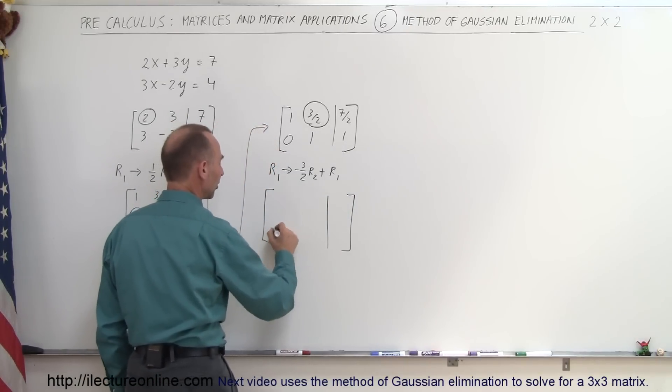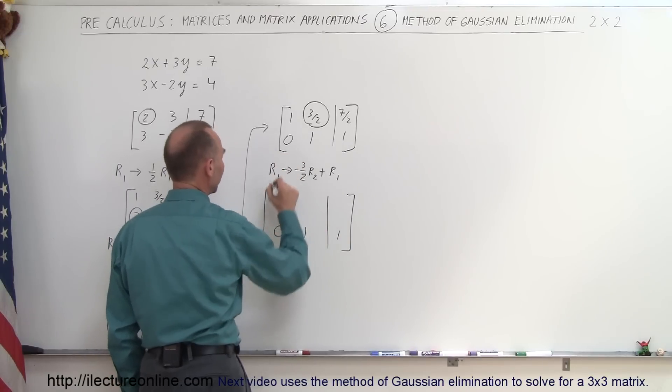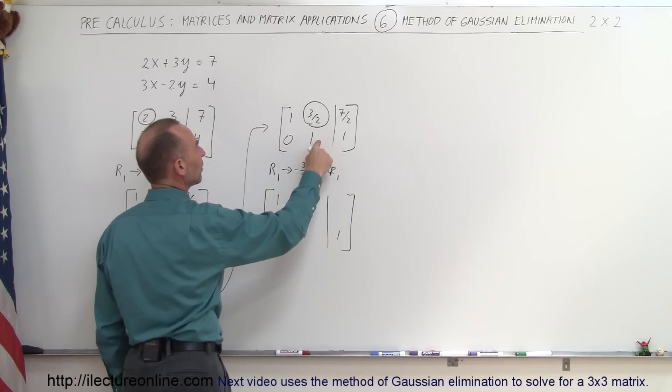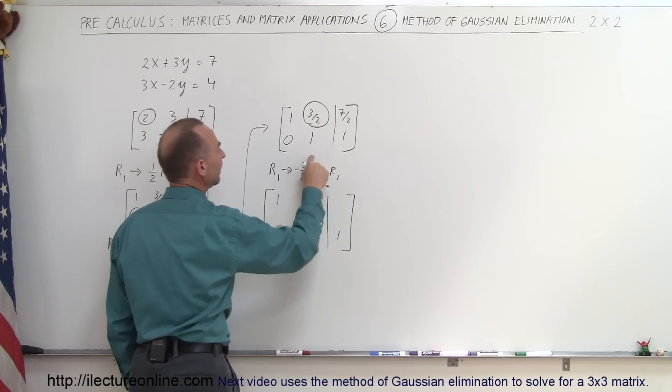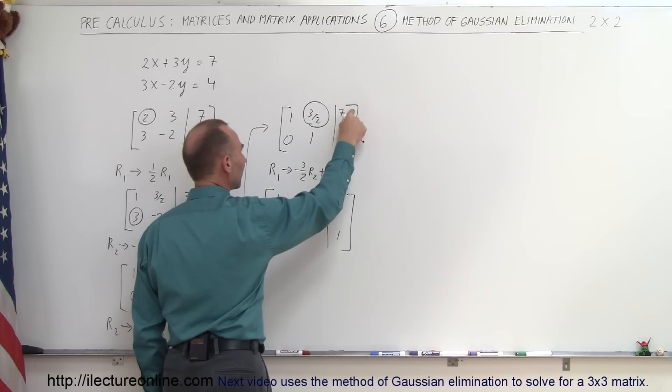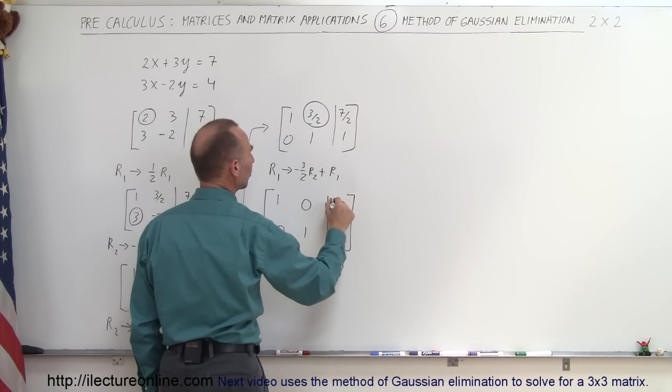If I do that, I get the following matrix. The second row does not change: I get a 0, a 1, and a 1. This 1 stays there. Now negative 3 halves times 1 is negative 3 halves, added to positive 3 halves gives me 0. Negative 3 halves times 1 is negative 3 halves, added to positive 7 halves gives me 4 halves, which equals 2.